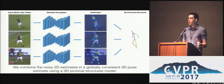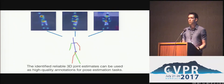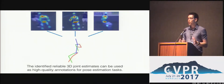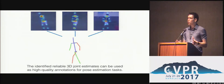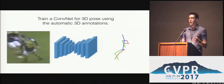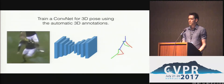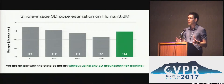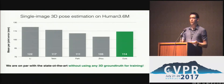With this approach, apart from achieving state-of-the-art results for multi-view pose estimation, we can use the 3D pose estimates as high-quality annotations for human pose estimation tasks. A straightforward way to use our 3D annotations is to train a network that takes a single RGB image as input and predicts the 3D pose of the human. We did that for Human3.6M and got very compelling results. In fact, our ConvNet trained only on our automatic annotations is on par with the state-of-the-art for this dataset, which uses the actual 3D ground truth for training.